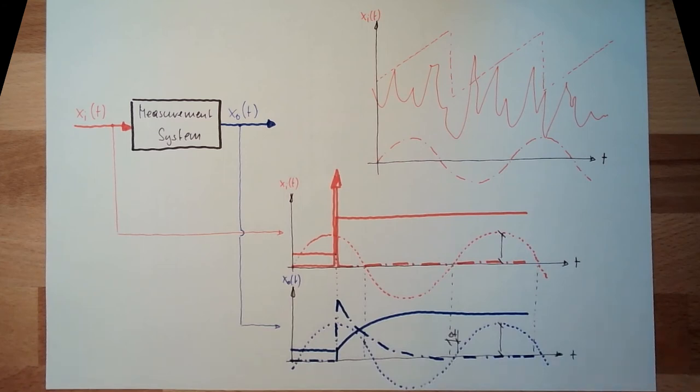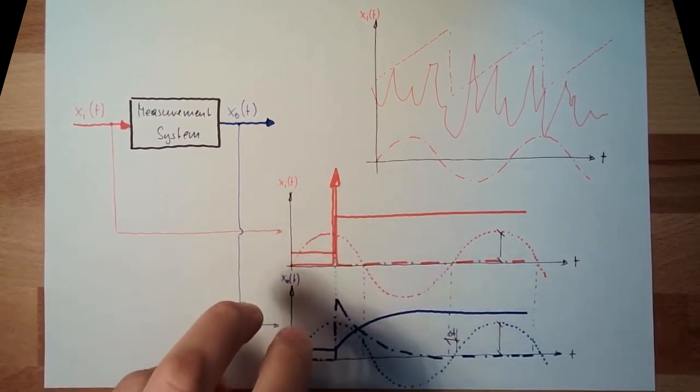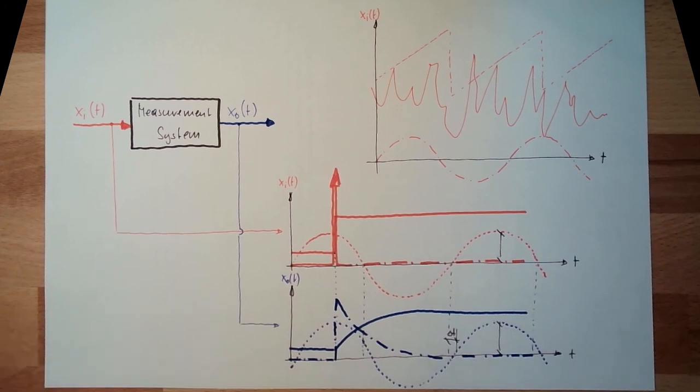Now, which of them would we need to use to have the dynamic behavior of the measurement system totally described? The answer is simple. Just use one of these. If you are using one of these, all others can be derived from it. There are typical responses of different measurement systems. And if you know the typical response to a step, if you know the step response, you also know already how it would react on a sinus or an impulse.